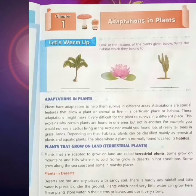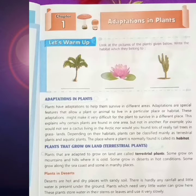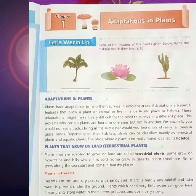Plants have adaptations to help them survive in different areas. पौदों को विविन छेत्रों में जीवित रहने में मदद करने के लिए अनुकूलन है. Adaptations are special features that allow a plant or animal to live in a particular place or habitat. अनुकूलन विशेश ताएं हैं जो किसी पौदे या जानवर को किसी विशेश अस्थान या आवास में रहने की अनुमति देती हैं.